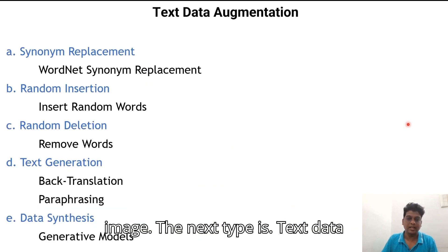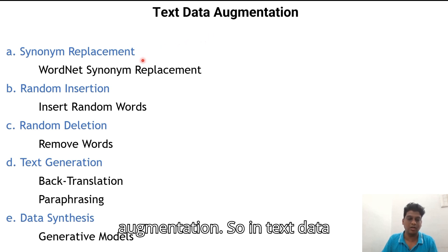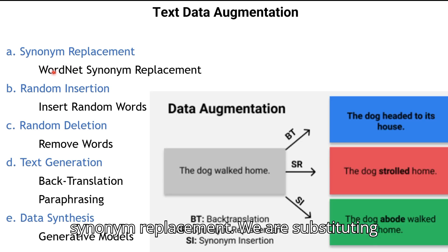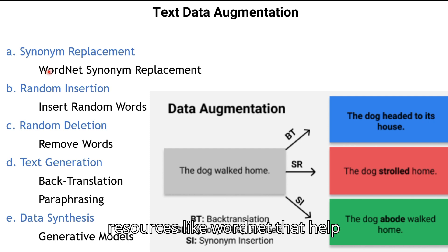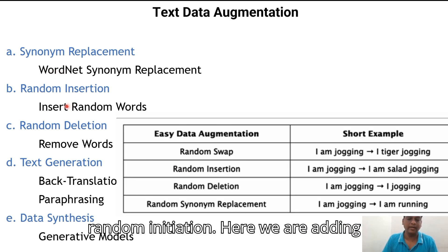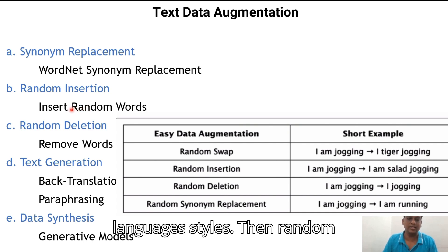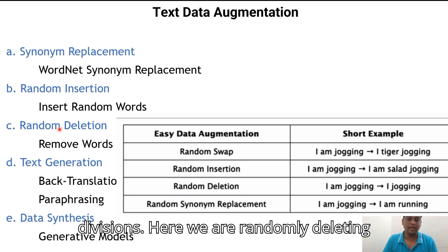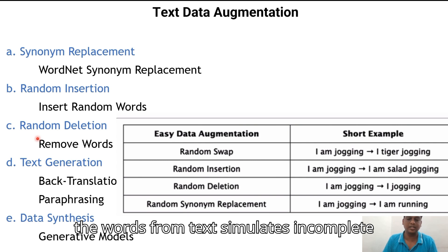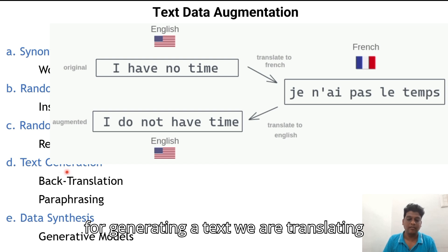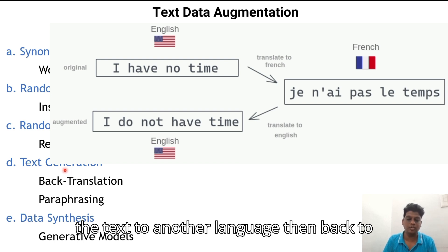The next type is text data augmentation, which has various classifications. The first is synonym replacement — substituting words with their synonyms using resources like WordNet, which helps create variations of text. Random insertion adds random words or phrases into the text, helping the model handle various language styles. Random deletion randomly removes words from text, simulating incomplete information. For text generation, we translate the text to another language and then back to the original language, which introduces variations in wording while maintaining the original meaning.